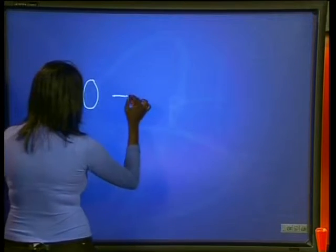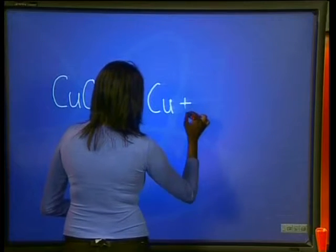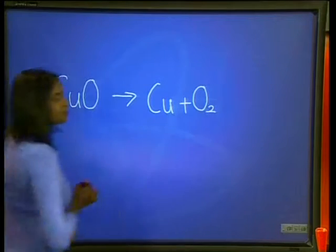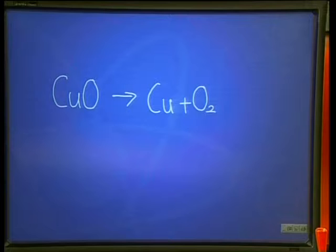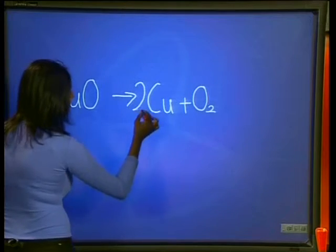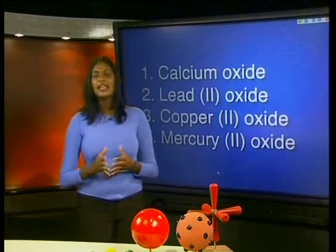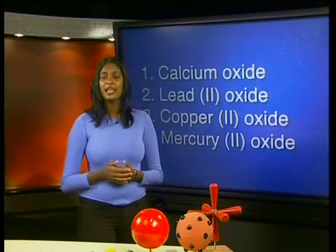The only thing that we've got left to do is to write the balanced equations for these reactions. We only saw a reaction when copper oxide decomposed. Copper oxide decomposes into copper and oxygen. To balance the reaction, we need to have two copper oxide particles on the left and two copper atoms on the right. Now, if we have another look at the substances we said we are going to test, you may be wondering what happened to mercury oxide.